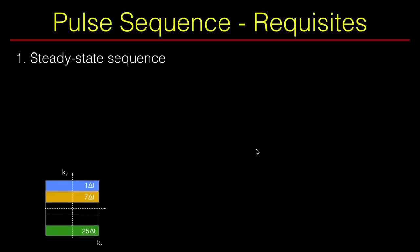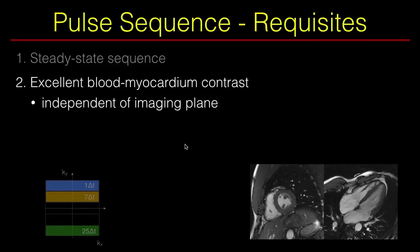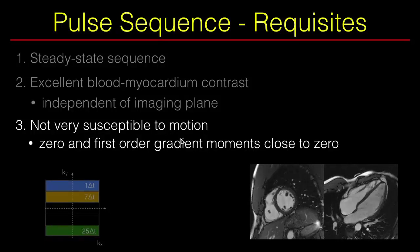With this reconstruction technique in mind, how do we design a cardiac cine sequence? We combine data acquired at different time points, so we need a steady-state sequence. We acquire images in different imaging planes, so we need bright blood and dark myocardial signal — good contrast independent of imaging plane. There is both blood flow and myocardial motion, so we need a sequence not susceptible to flow and motion; the zeroth and first order gradient moments should be close to zero.